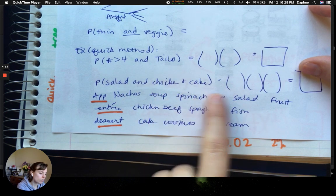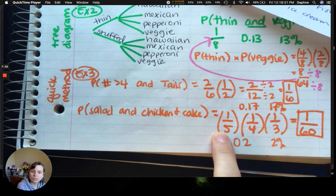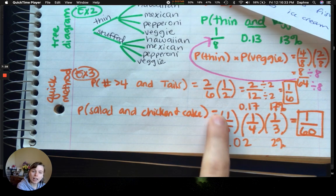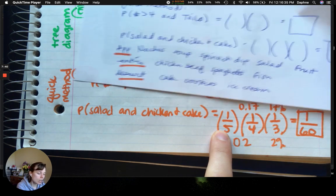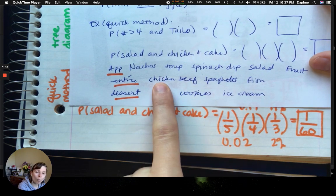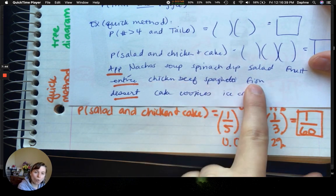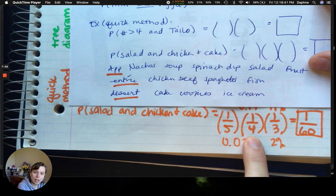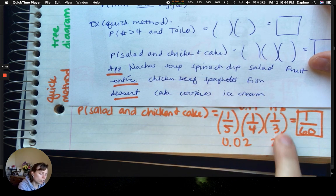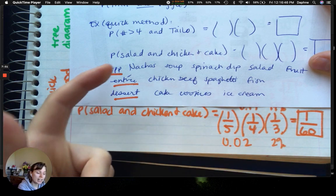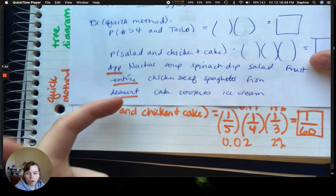Salad is one of the options. How many options total are there? 1, 2, 3, 4, 5. So, I have 1 fifth. That's where that 1 fifth is coming from. I have 1 salad out of 5 appetizers. We'll see the same thing here. I have 1 chicken out of 4 entree options. And I have 1 cake out of 3 dessert options.